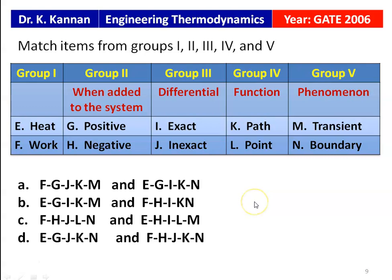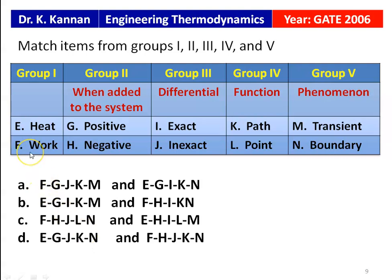The answer for heat is: positive when added, inexact differential, path function, boundary phenomenon — giving the combination e, g, j, k, n, which is the fourth option D. For work, when applied to the system it is negative, again inexact differential, path function, boundary phenomenon — giving F, H, j, k, n. The correct answer is D.